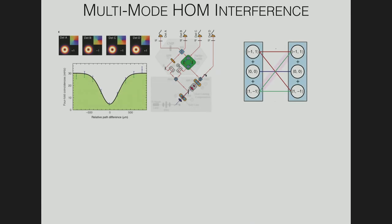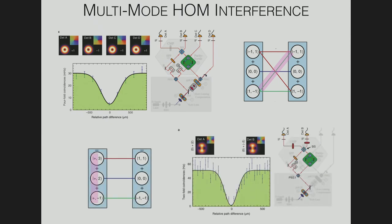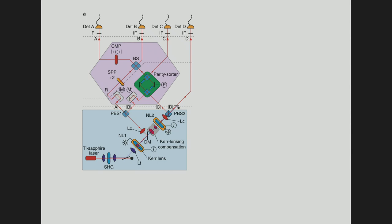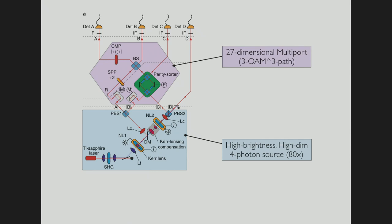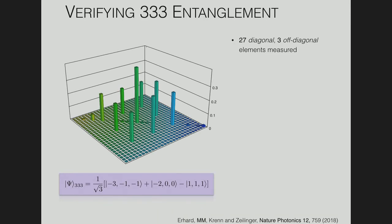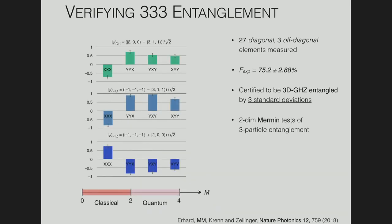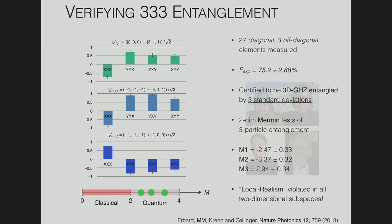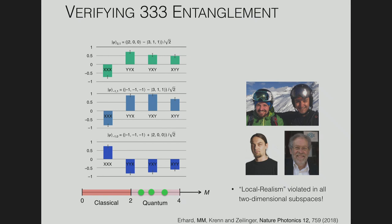This experiment involved multi-mode Hong-Ou-Mandel interference between several different modes. The actual setup had two main components: a much brighter source of four-photon correlations and a massive 27-dimensional multiport — 27 because it was three OAM modes raised to the power of three paths. We verified three-three-three entanglement in the same way as before, though this time it took 21 days to measure. We also did Mermin non-locality tests in each two-dimensional subspace and found entanglement in every two-dimensional subspace.